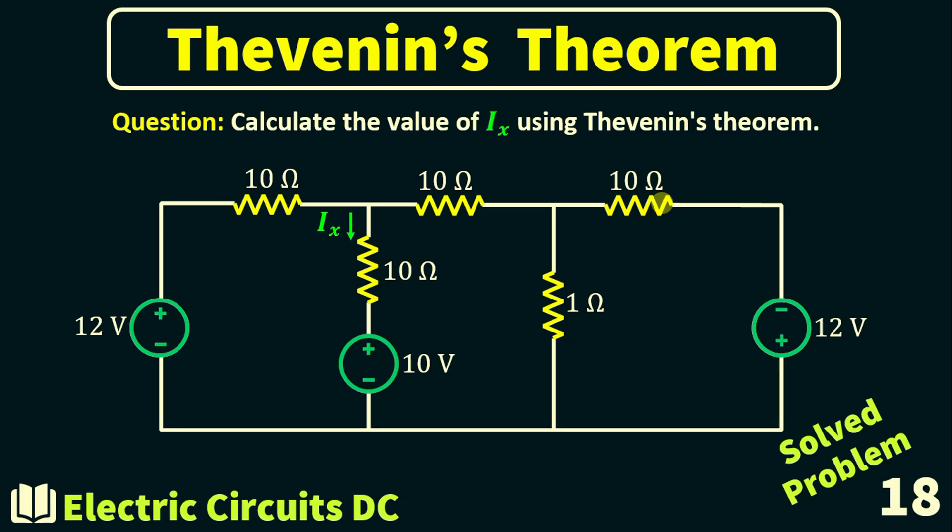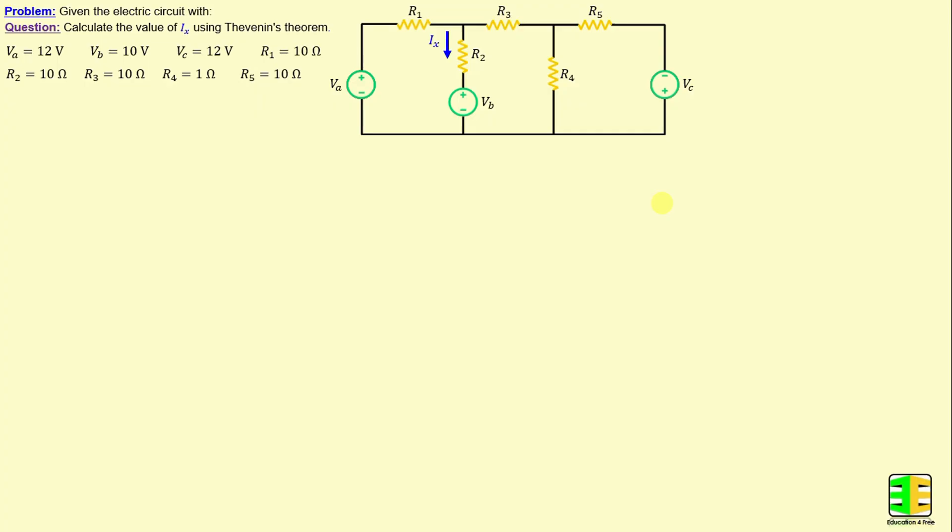Let's dive in and begin with solved problem number 18. Let's consider this network consisting of 5 resistors labeled R1 through R5, as well as 3 independent voltage sources VA, VB, and VC. The question now is to calculate the value of IX using Thevenin's Theorem.